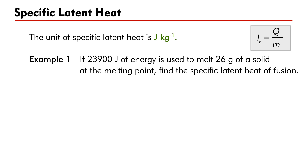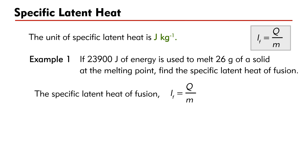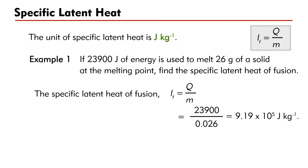For example, if 23,900 joules of energy is needed to melt 26 grams of a solid at the melting point, the specific latent heat of fusion of the solid is 23,900 divided by 0.026, equal to 9.19 times 10 to the power 5 joules per kilogram.